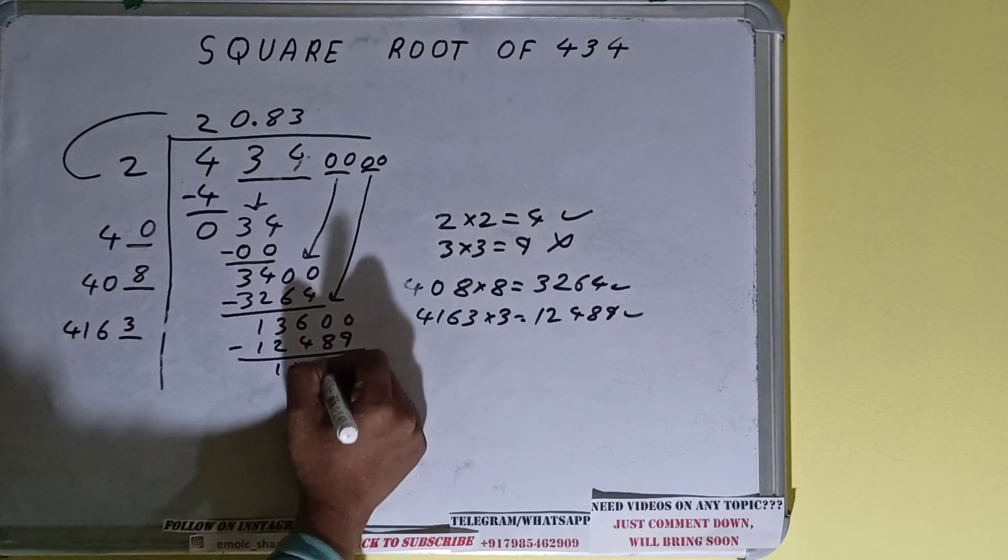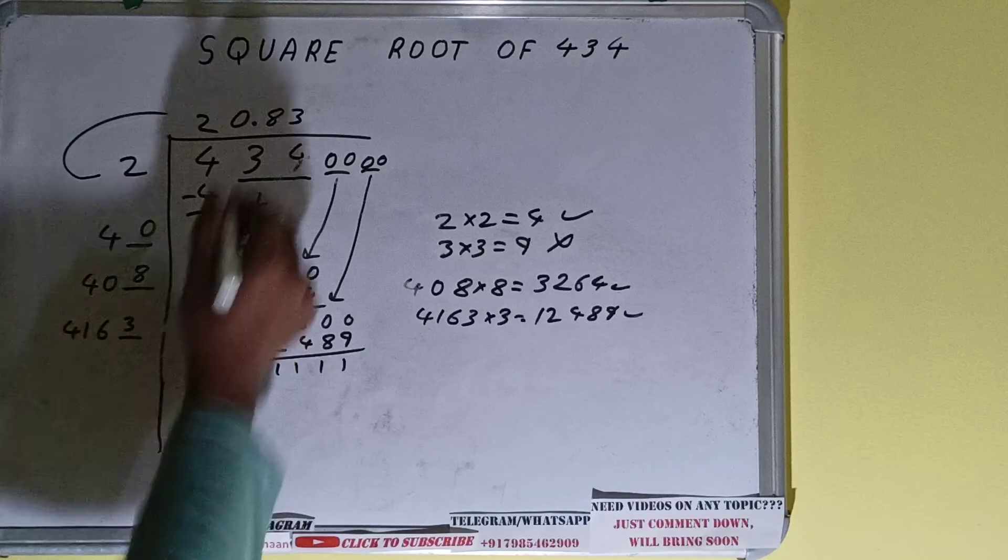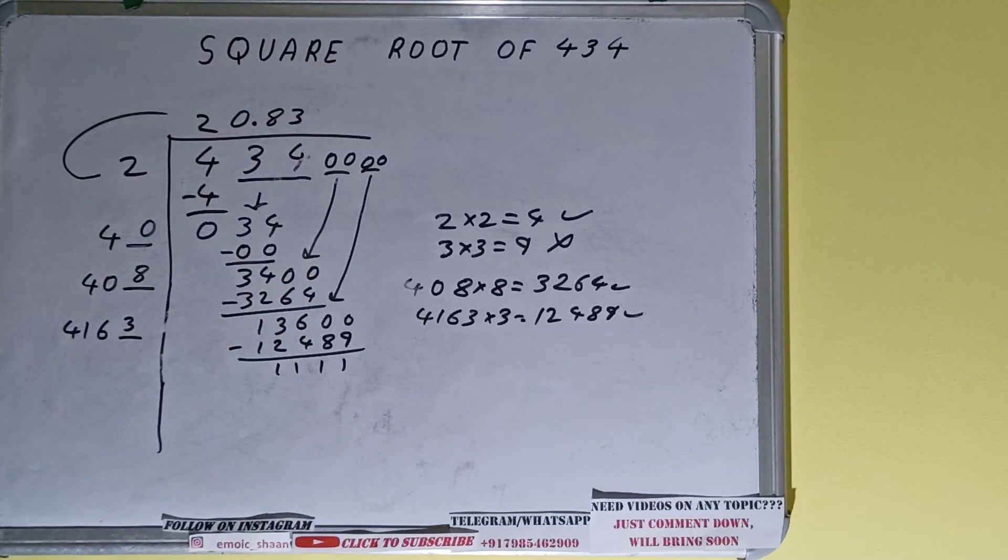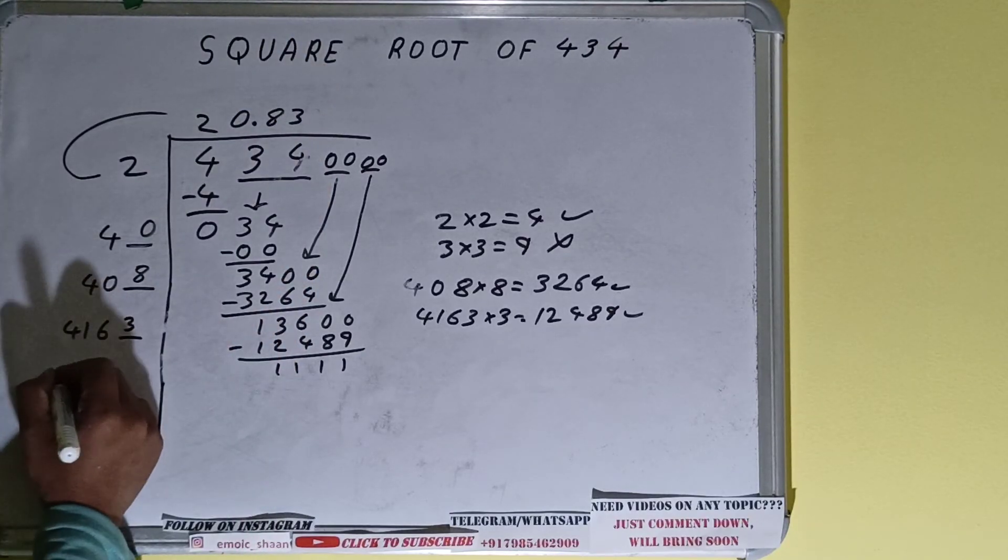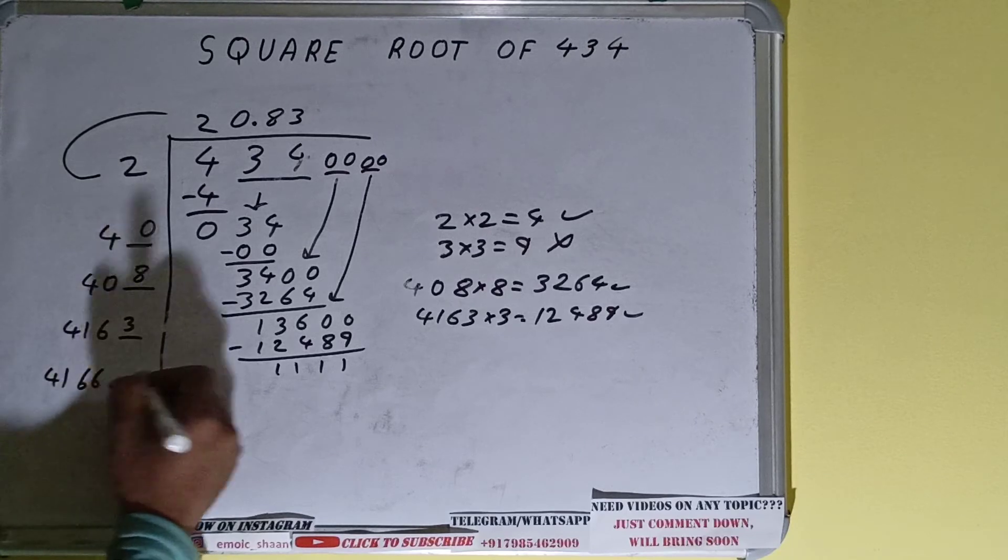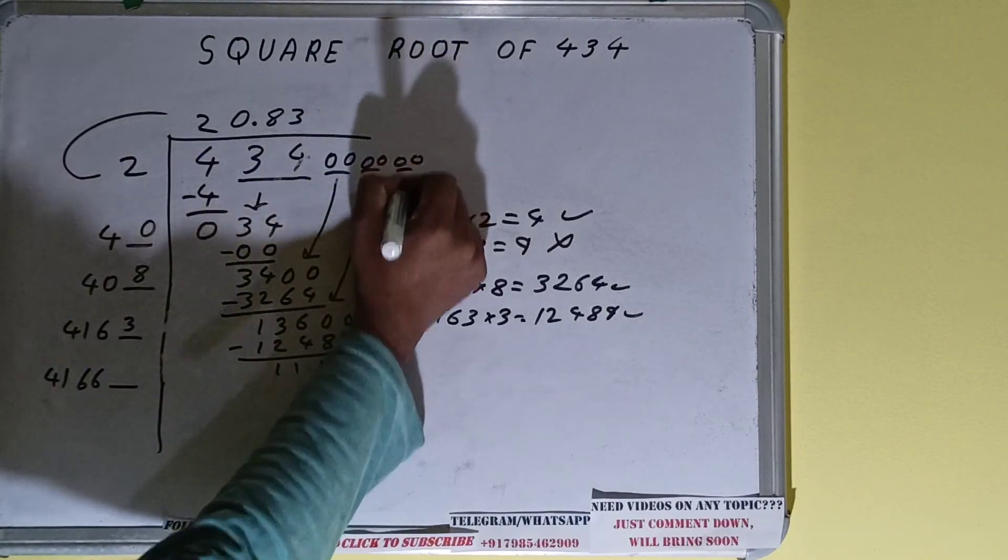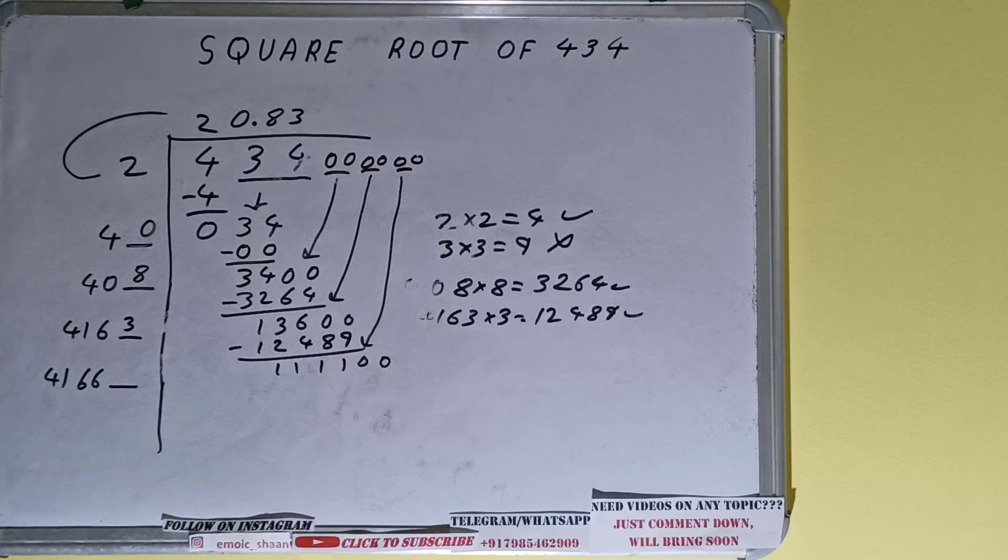And we'll be having 1111. Now 4163 × 3 we did, so add both: 4163 + 3 will be 4166, and one digit extra. This we need to make big. Bring the next pair of zeros down and it will become 111100. Now we can try it 2 times.